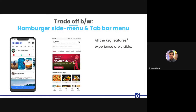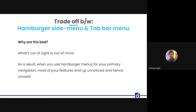A common example of discoverability is the trade-off between hamburger menus and tab bar menus. Facebook and Zomato use tab bar menus to make all key experiences and navigation links clearly visible rather than hiding them in a hamburger menu in the corner. What is out of sight is out of mind — when you use hamburger menus for primary navigation, most features end up being unnoticed and unused.